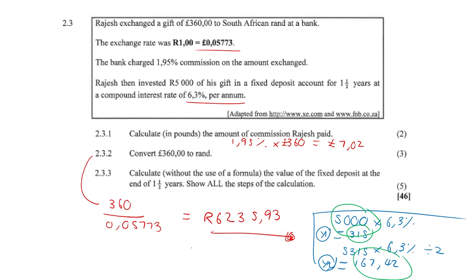Adding these three figures together — 5000 plus 315 plus 167.42 — we get a final answer of 5482 Rands and 42 cents after 18 months of investment.